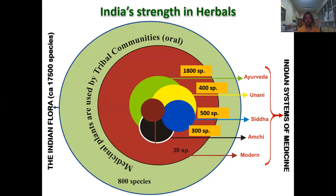India's strength in herbals: we have around 17,500 species of plants in our country, and different systems of medicine including Ayurveda, Yunani, Siddha, Amchi and modern medicine, as well as tribal systems of medicine. In Ayurveda alone, 1,800 species have been used; Yunani uses 400 species; Siddha uses 500 species; Amchi uses 300 species; modern medicine uses 30 species; and tribal communities use about 800 species. Ayurveda, Siddha, Yunani and Amchi are all codified systems, referred to as the ISM systems of medicines.